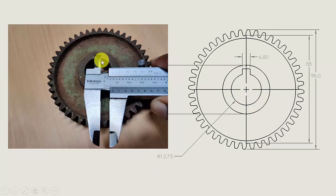Next is keyway width. The keyway width is 6.8 mm. This is how we have to measure the keyway width.